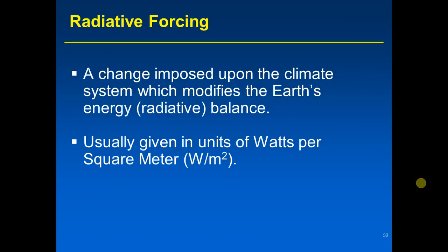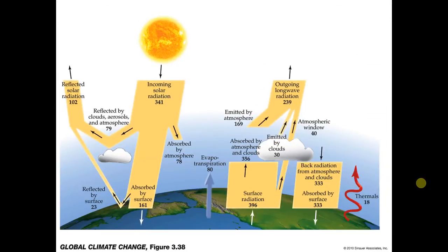When we looked at the energy budget diagram a few lectures ago — back in lecture three — I said just think of the numbers as units for now. The units are watts per square meter. For example, there are 341 watts per square meter of incoming solar radiation entering the top of the atmosphere each year, averaged over the entire Earth. So solar radiation is basically a rate of energy per area.